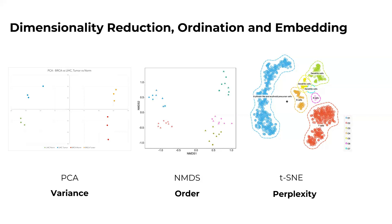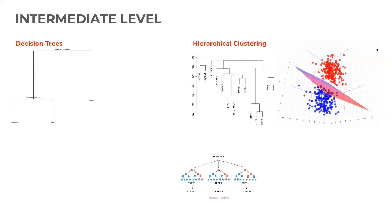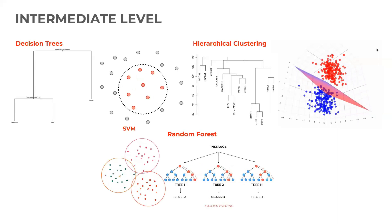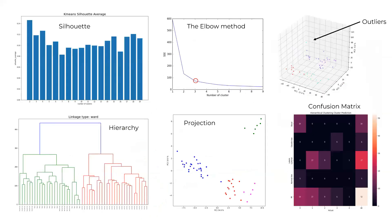Additionally, you'll gain an understanding of dimensionality reduction techniques and machine learning using scikit-learn. As you progress to the intermediate level, you'll deepen your understanding of clustering and advanced machine learning techniques specifically tailored for biomedical data analysis. You'll explore clustering techniques like K-means, hierarchical clustering, and spectral clustering using Python clustering packages like scikit and scipy.